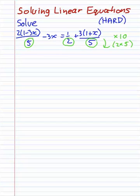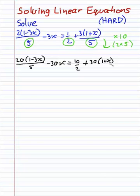And so when we do that, what we get is now 2 times 10, so we're going to have 20, 1 minus 3x all on 5, minus 3x is going to be equal to 10 on 2 plus 30, 1 plus x on 5. Now, is this really any simpler? Actually, it is a bit simpler, because what we can do now is cancel the fractions, and then I promise you, it will look a lot easier.